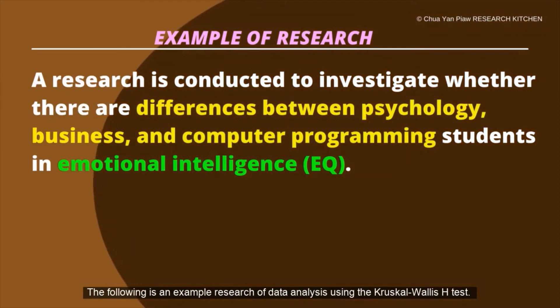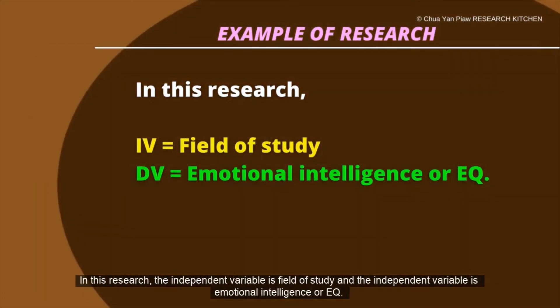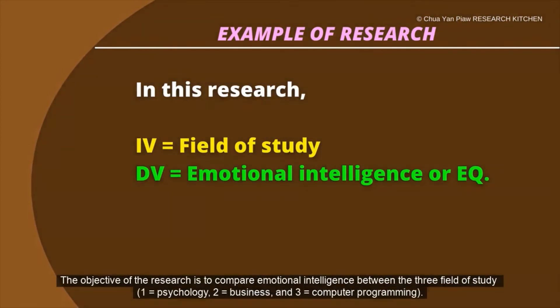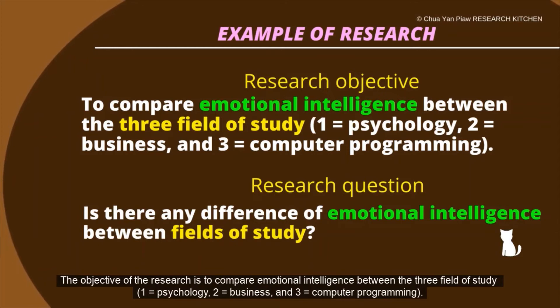The following is an example research using the Kruskal-Wallis H test. In this example, a study is conducted to investigate whether there are differences between psychology, business, and computer programming students in emotional intelligence. The independent variable is field of study and the dependent variable is emotional intelligence, or EQ. The objective is to compare emotional intelligence between the three fields of study: one, psychology; two, business; and three, computer programming.